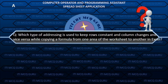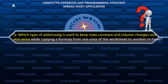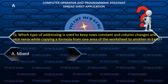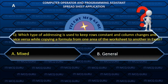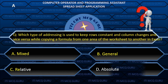Which type of addressing is used to keep rows constant when columns change and vice versa while copying a formula from one area of the worksheet to another in Excel? A. Mixed.